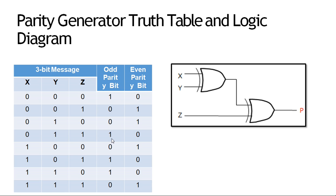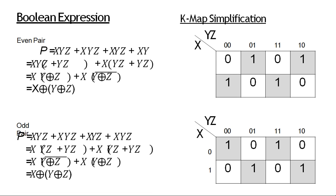011 में एक one और add करते ही वो odd number of ones बन जाएंगे, और एक 0 add कर दूंगी तो वो दो ones होंगी — 0 और 2 ones — तो even होगी। इस तरह से यह odd और even parity होती है।